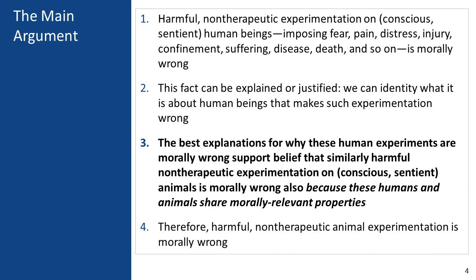The main argument is this. Premise one: harmful non-therapeutic experimentation on conscious and sentient human beings — such as imposing fear, pain, distress, injury, confinement, suffering, disease, death, and so on — is wrong. Second, this fact can be explained: we can identify what it is about human beings that makes such experimentation wrong. Third, the best explanations for why these human experiments are wrong supports belief that similarly harmful non-therapeutic experimentation on animals is wrong also, because these humans and animals are similar in important ways — they share morally relevant properties. Therefore, harmful non-therapeutic animal experimentation is wrong.